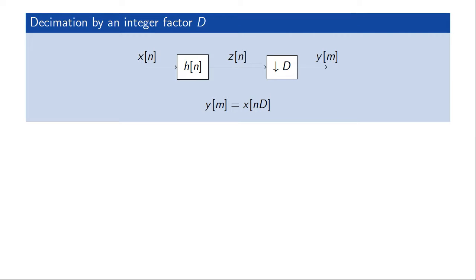In this video, we'll consider what happens in detail when we do decimation and interpolation. Let's begin with the decimation circuit, which is a filter followed by a downsampler removing samples from the intermediate signal Z of n.